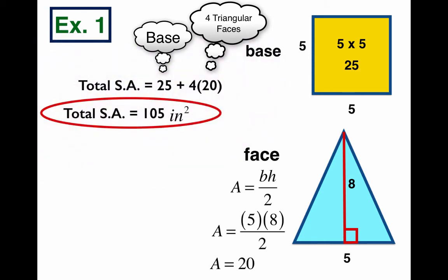Total surface area is 105 inches squared. So we take the base plus all 4 of those faces, add them up, and we've got our total surface area.